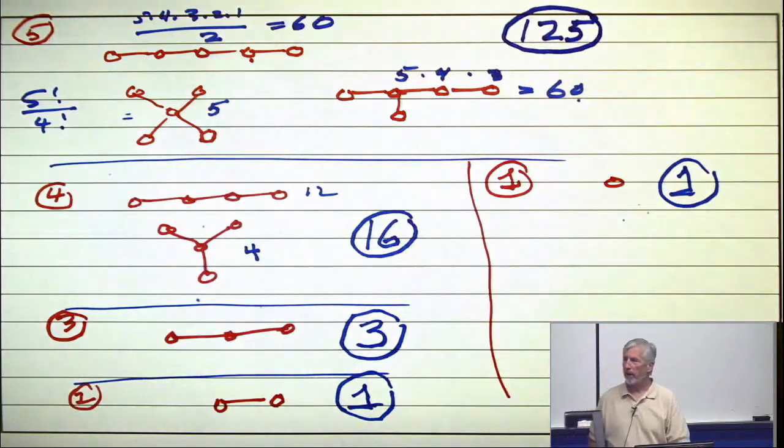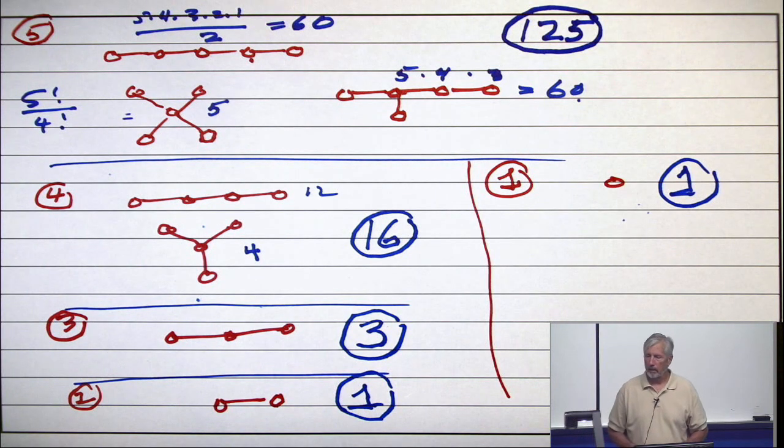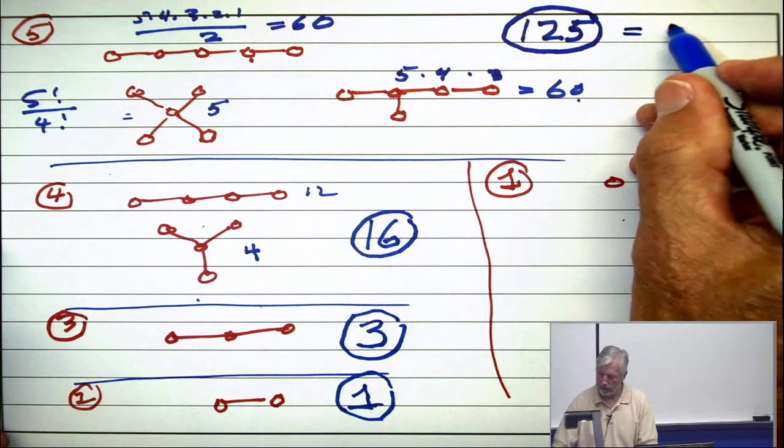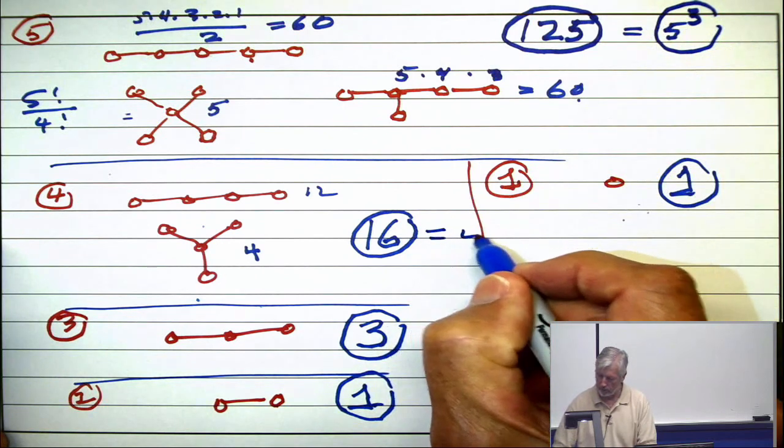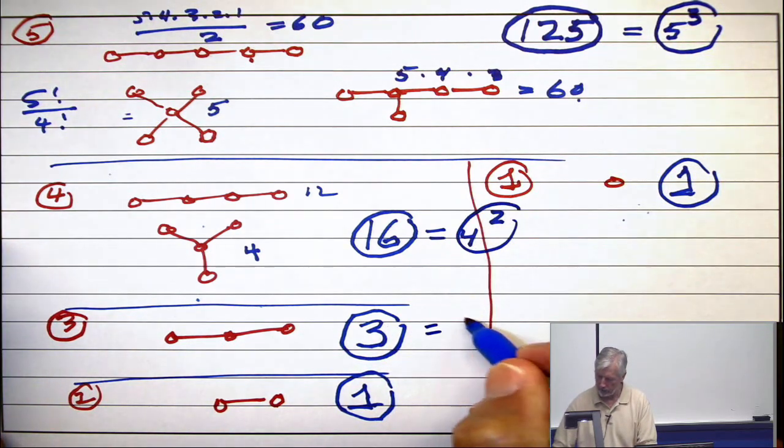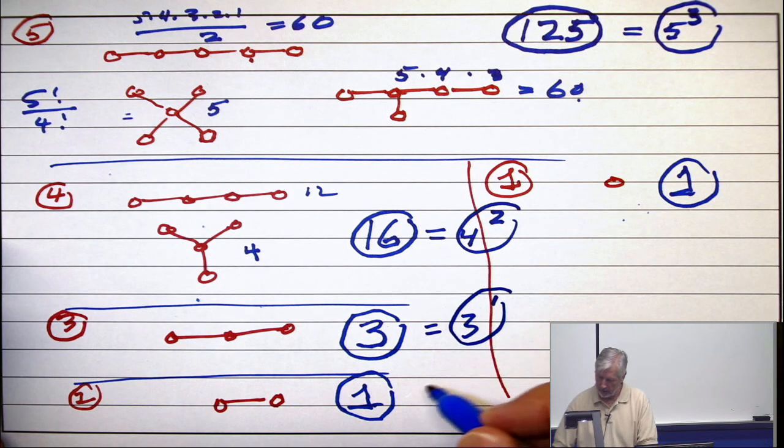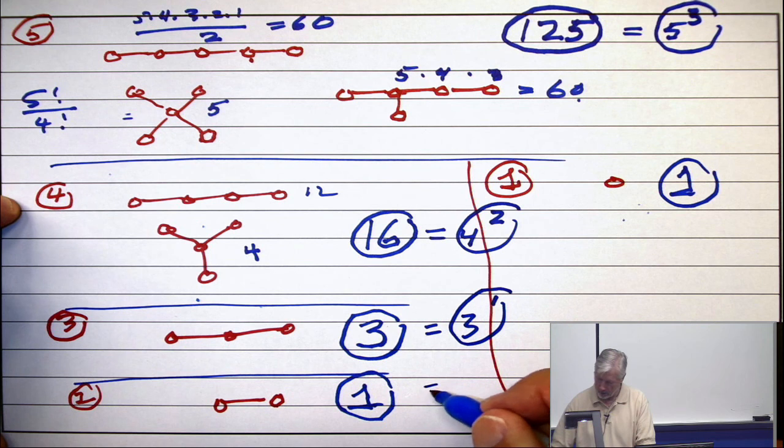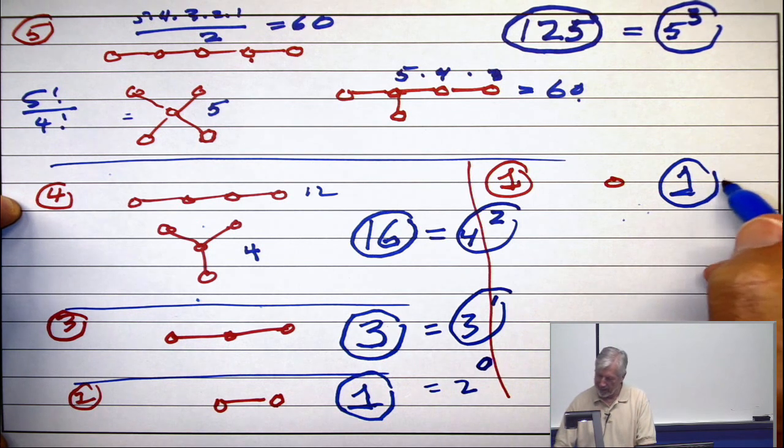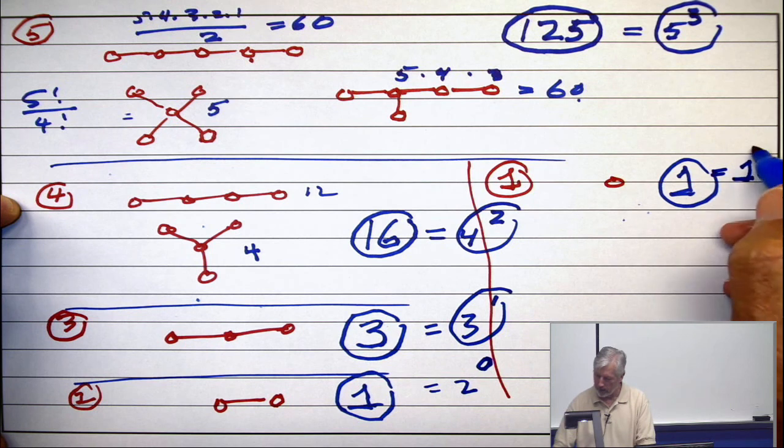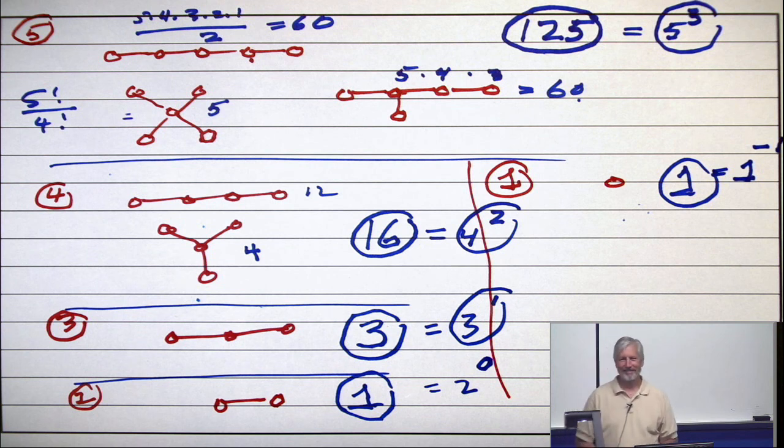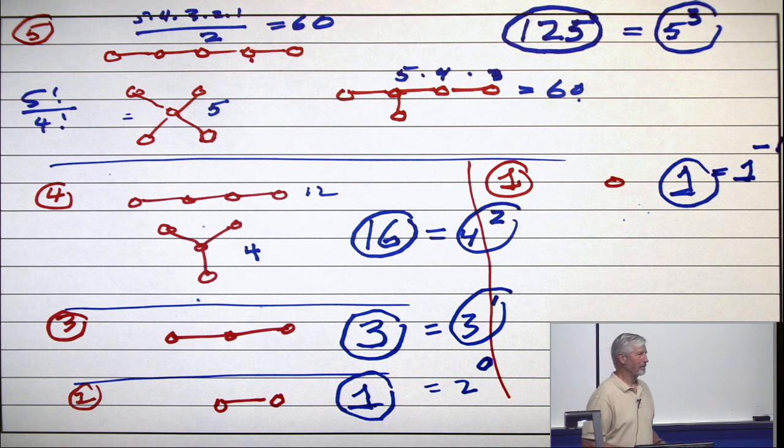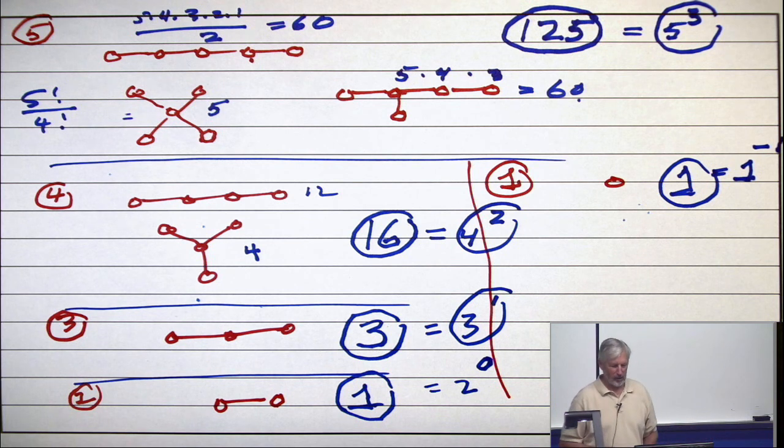Now, do you see the general pattern? Because one twenty-five is five cubed, sixteen is four squared, three is three to the one, one, one is two to the zero, and actually this is one to the minus one. So, what is the formula? n to the n minus two. Now, that's not a proof. That's simply an illustration.